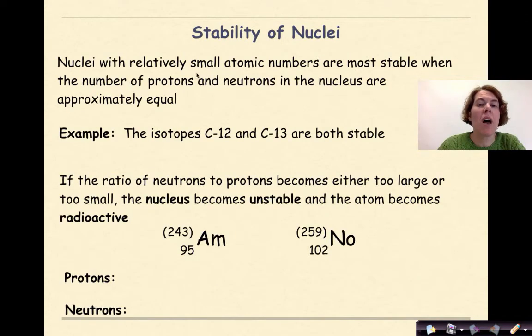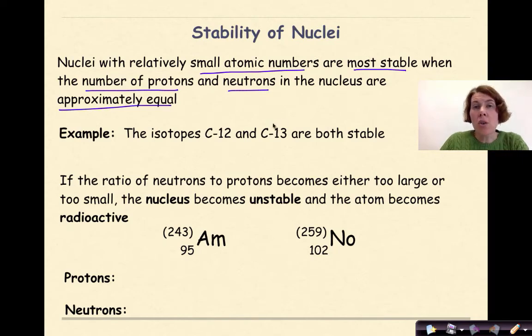Nuclei with relatively small atomic numbers are the most stable when the number of protons and neutrons in the nucleus are approximately equal. So an example, isotopes of carbon-12 and carbon-13 are both stable. Carbon-12 is going to have 6 protons and 6 neutrons. Carbon-13 is going to have 6 protons to 7 neutrons. So the ratio of protons to neutrons is relatively 1 to 1.